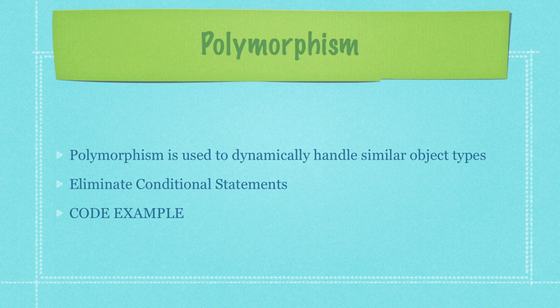Polymorphism, of course, you've seen countless times. In this tutorial, we're going to talk about how it is used to dynamically handle numerous similar object types, and also how it is used to simulate a pluggable software component type system. When you're programming, you're often performing different operations based on conditional statements like if and case. This makes your system less flexible because each time a new variation is needed, code has to be changed throughout your system. Our goal is to create varying polymorphic objects for each varying component.